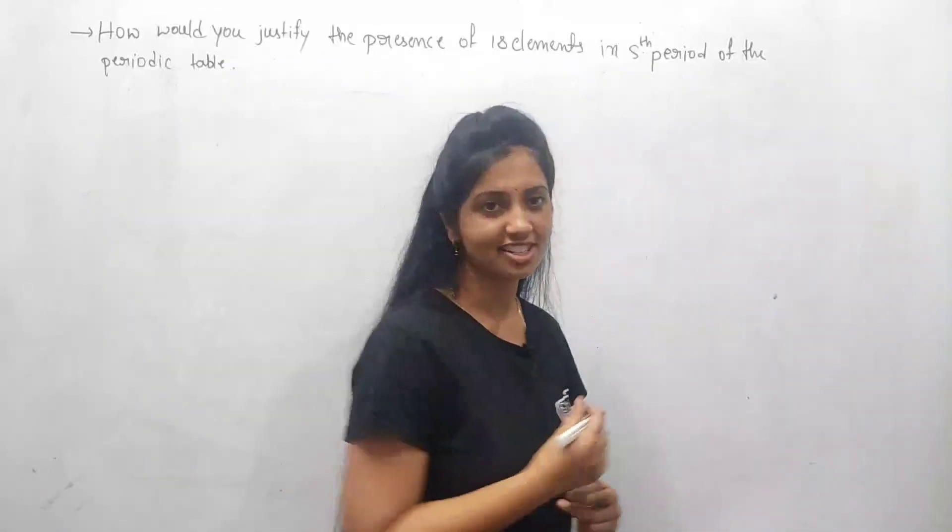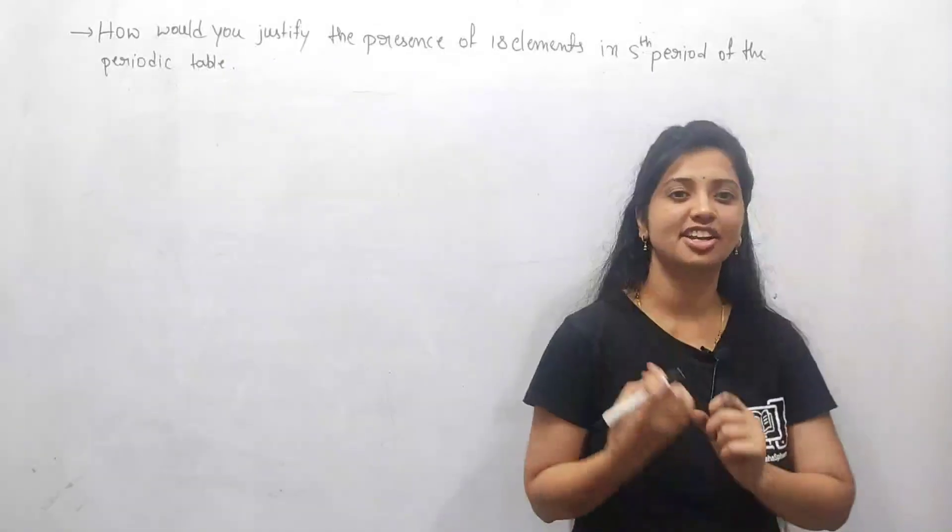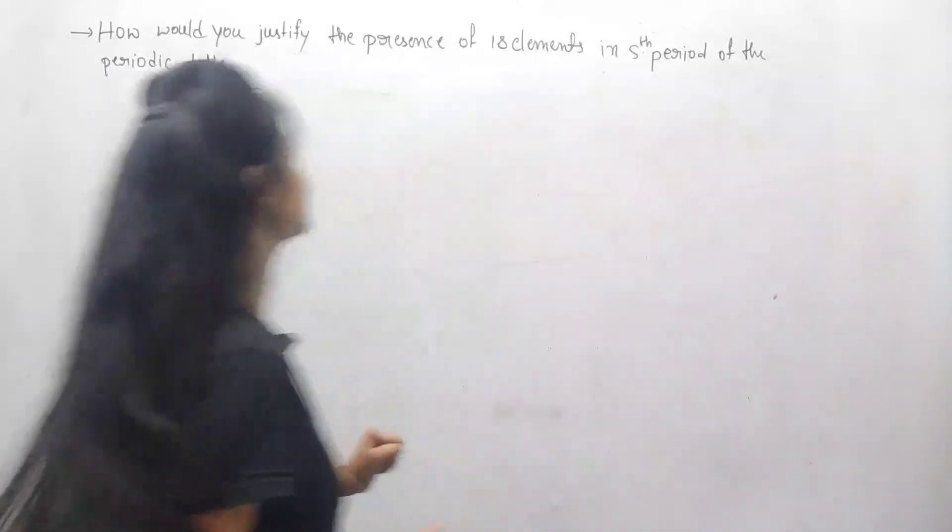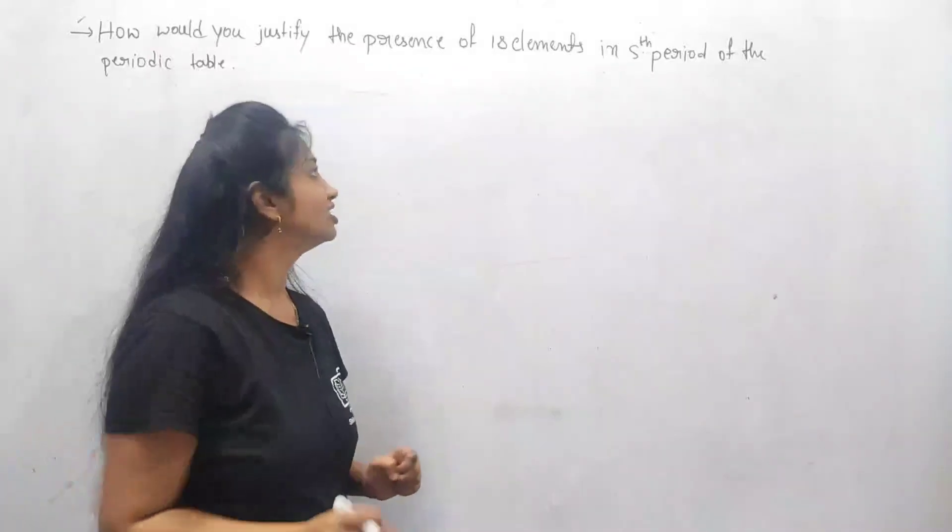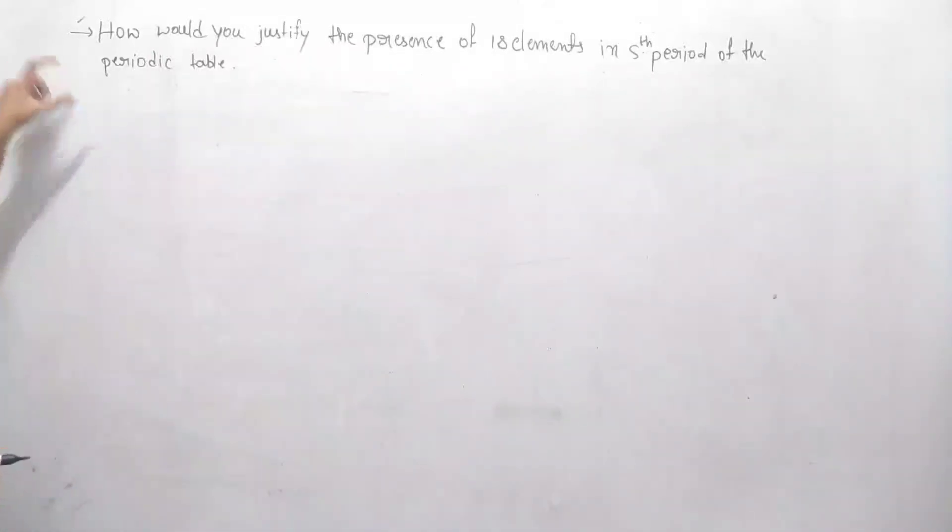Hi guys, in the previous class we discussed electronic configuration and the periodic table. Based on that concept, this is the problem mentioned in your NCERT book. Let's come to the question: how would